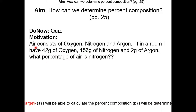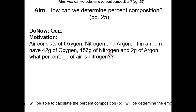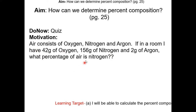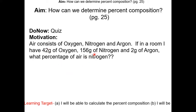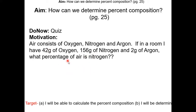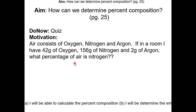To do that, you're going to add up the mass of oxygen, nitrogen, and argon. Then divide the mass of nitrogen over the mass of air, times 100, which will give you the percent composition of nitrogen in air.